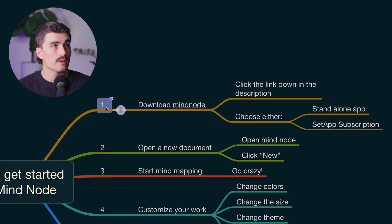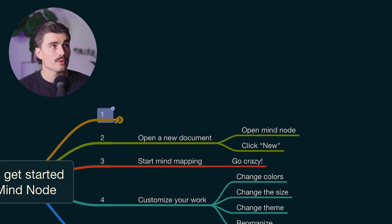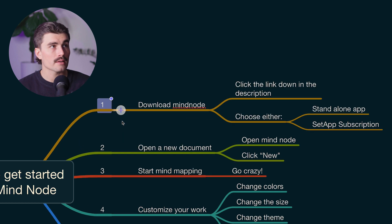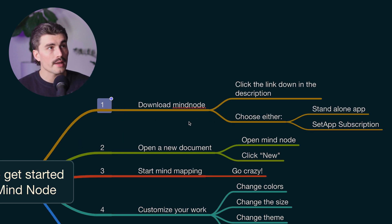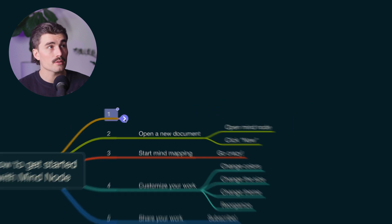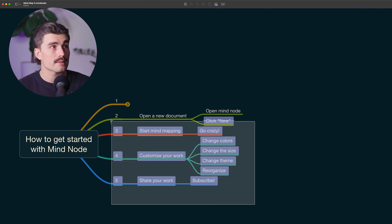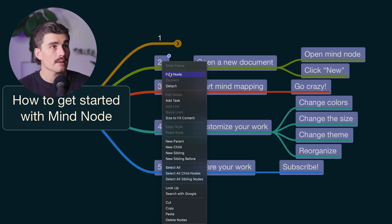Now let's say I want to fold this node. I can right-click and go to 'fold node,' and then we see this little arrow — if I click on that, it'll expand it. Here on Mac, if I hold down the option key, it'll show the fold option right there. And you can also fold multiple nodes at once — just select all of these, right-click, fold node. And there we go.